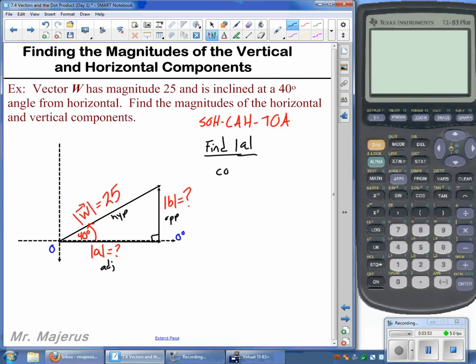So we should be able to set up and solve cosine of our angle 40 degrees is equal to the adjacent side, we don't know, let's just call it A for now, over the hypotenuse 25. And with a little algebra here, we should be able to solve this thing through pretty quickly.